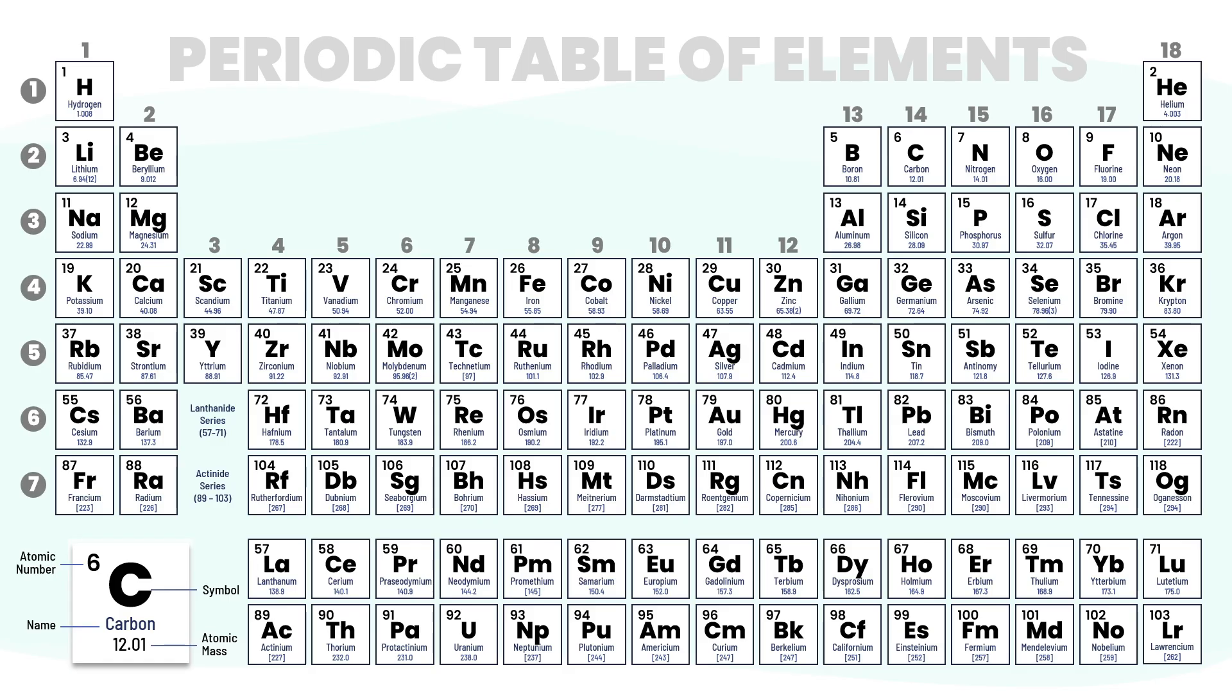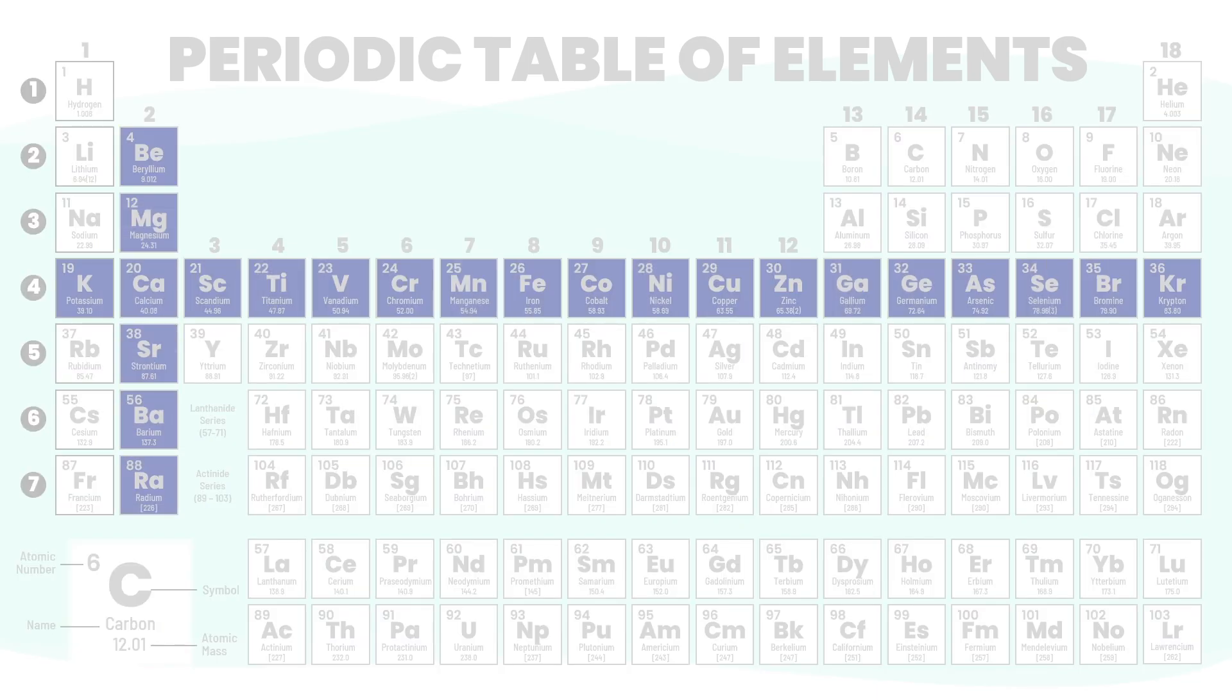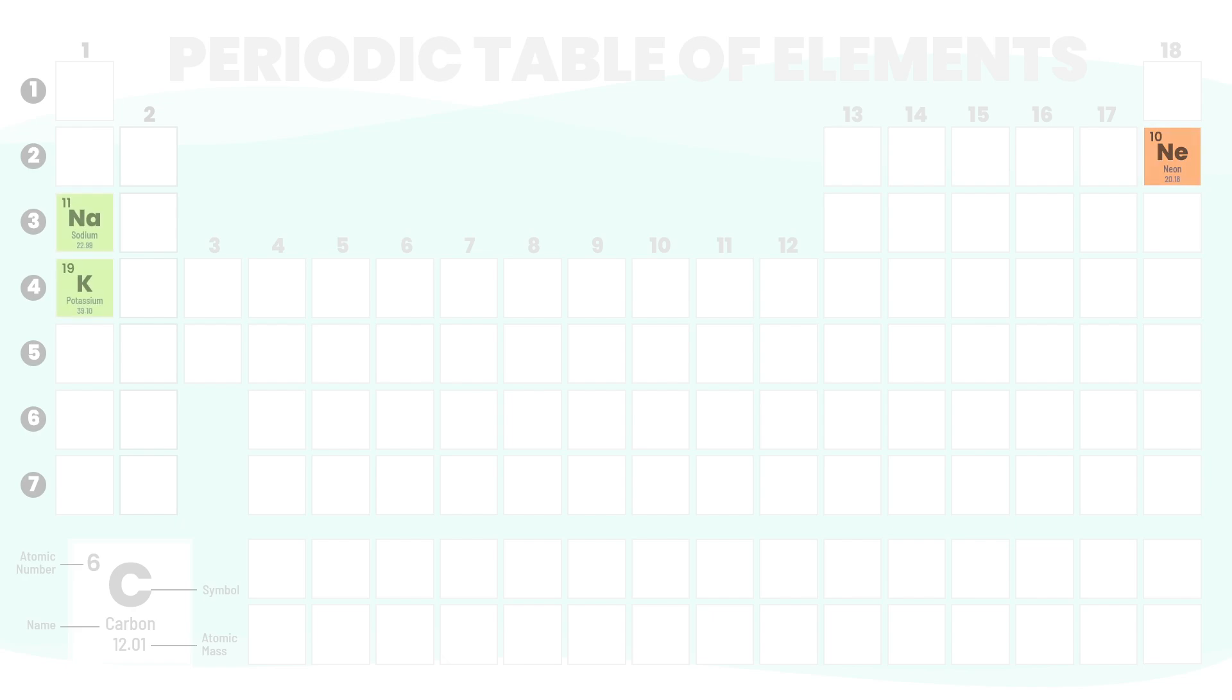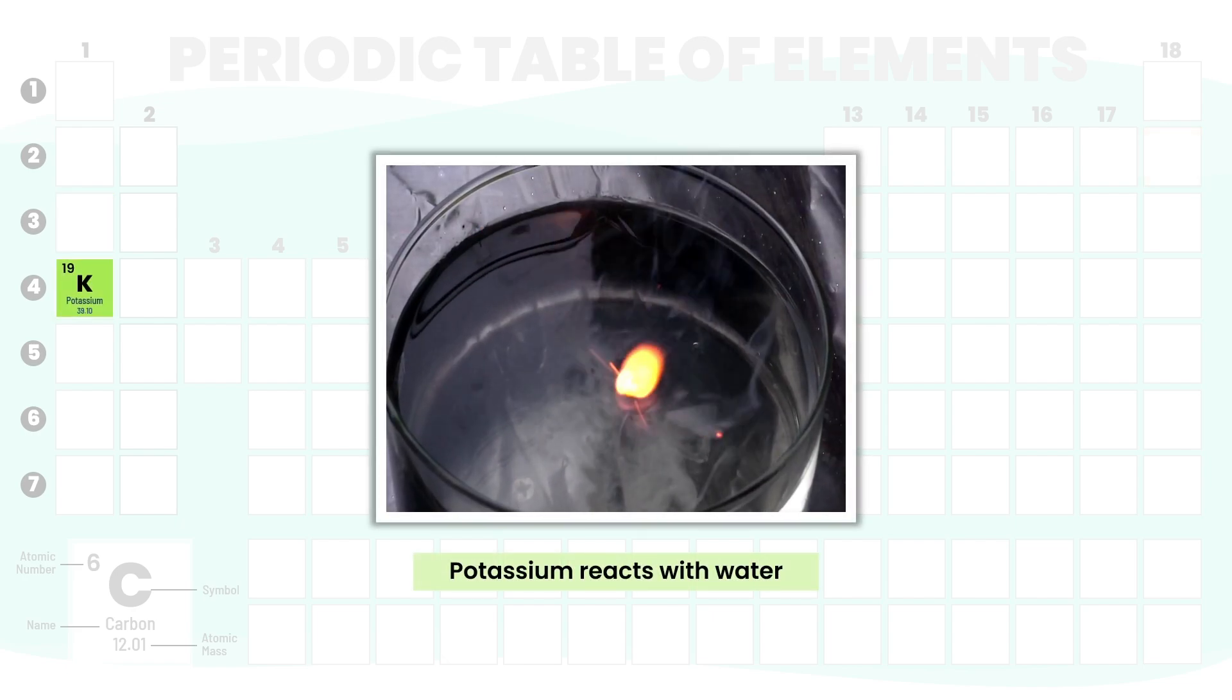Take a step back and look at the periodic table. There's more to it than just rows and columns. It's a map. Where an element is tells you something important - how it behaves in a reaction, its reactivity.